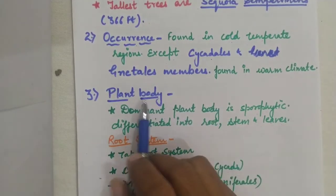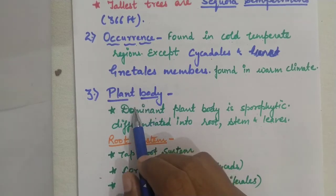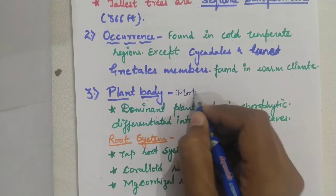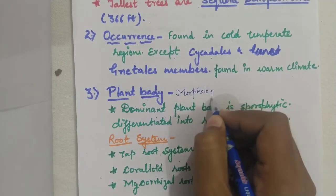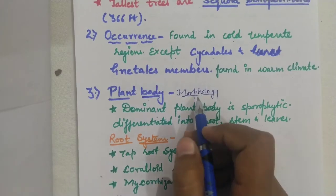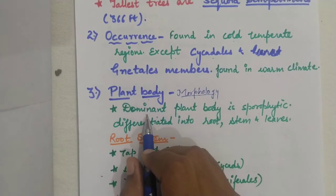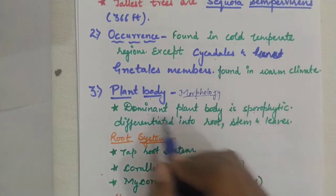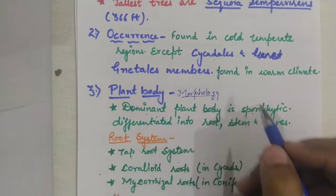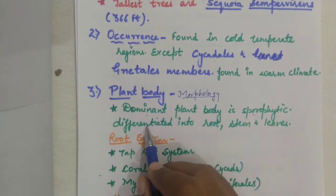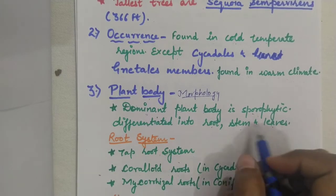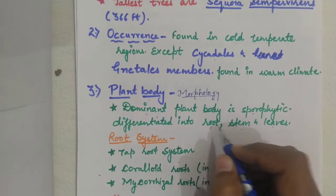Now the morphological characters: the plant body of gymnosperms is sporophytic. The dominant plant body that you see is sporophytic, and it is differentiated into true root, stem, and leaves.